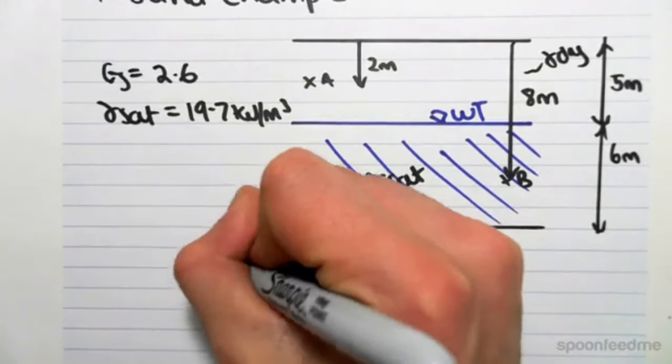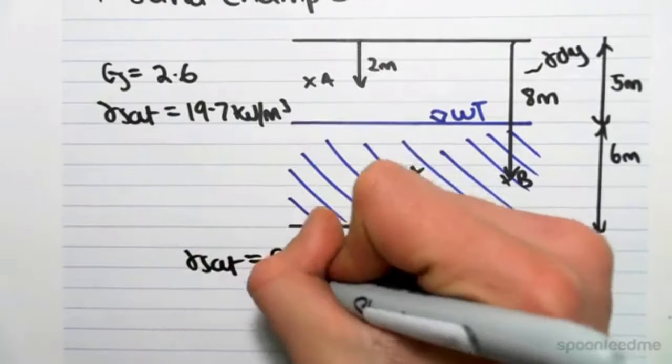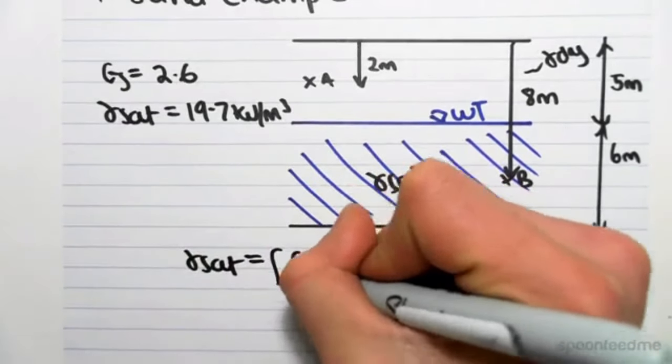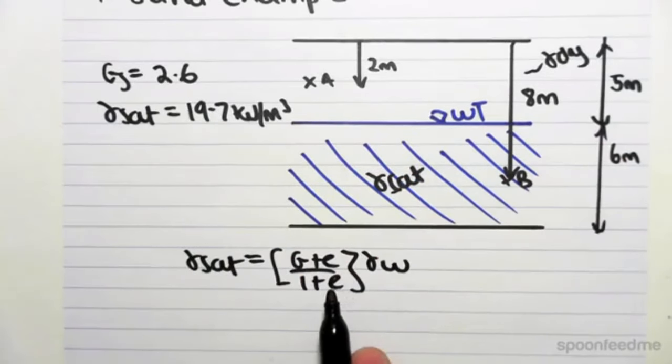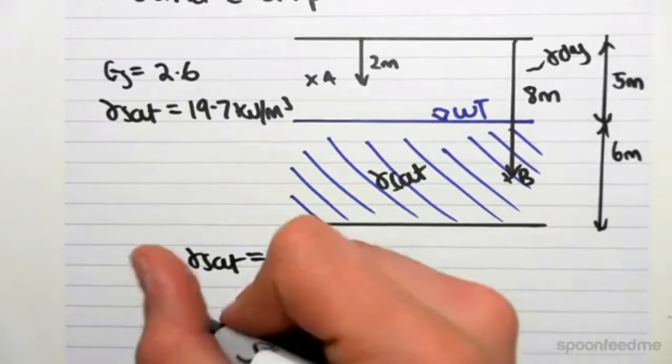So we first have to find gamma dry because we're only given gamma sat. So we know that gamma sat equals G plus E over 1 plus E times gamma W. So we're going to find E.